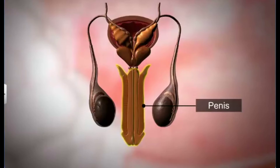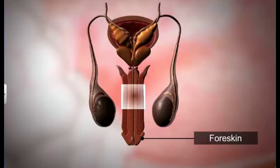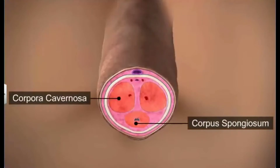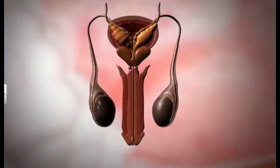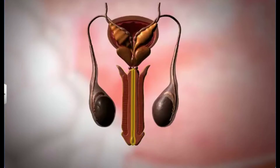The external genitalia in males is called the penis. The penis is the copulatory organ and is covered by a loose sheath of skin. The skin that hangs over the tip of the penis is known as the prepuce or foreskin. It is made up of special tissues like corpora cavernosa and corpus spongiosum. The tip of the penis covered by the prepuce is called the glans penis. The penis, urethra, vas deferens, and Cowper's glands together help in copulation and in the deposition of sperm within the female body.